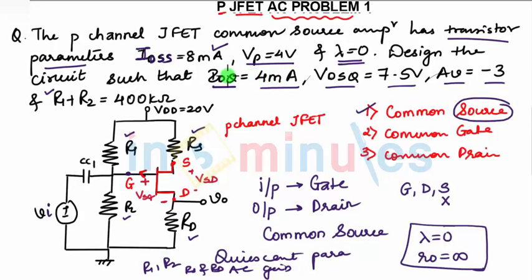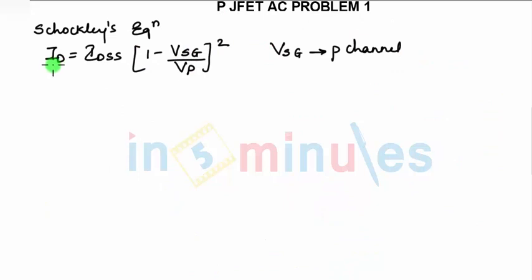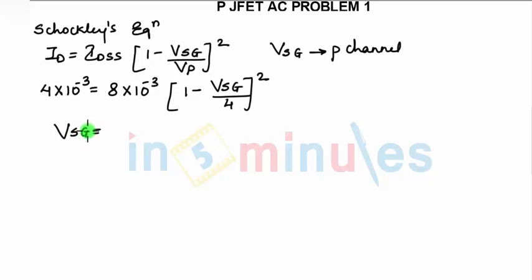When you look here, ID is given as 4 milliamperes, IDSS is 8, and VP is 4. So substituting the values: ID is 4 milliamperes, so 4 times 10 raised to minus 3 equals 8 times 10 raised to minus 3 times [1 minus VSG by VP] whole square, where VP is 4. We don't know VSG. So from this, we will get VSG as 1.17 volts. When you solve the above equation, you will get VSG as 1.17 volts.